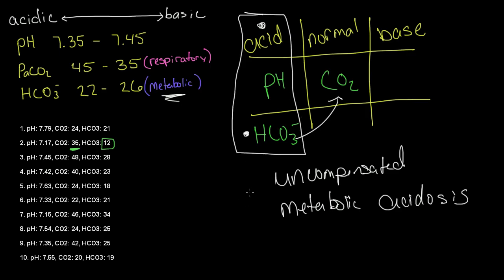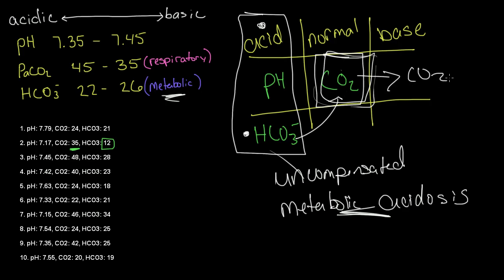This means we are uncompensated. Our primary condition is metabolic acidosis, and the opposite compensatory mechanism — in this case the respiratory system — is doing absolutely nothing to compensate for this disorder. That's why this value is still normal. If this CO2 was over here instead, we would be in partially compensated metabolic acidosis, but since it's not, we are in uncompensated metabolic acidosis.